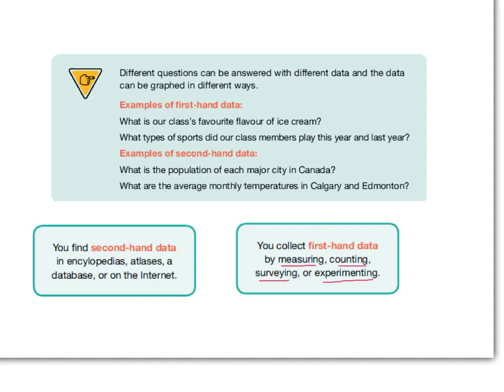So you are doing the measuring, you are doing the counting, you are doing the surveying, and you are doing the experimenting. Those would all be examples of first-hand data.